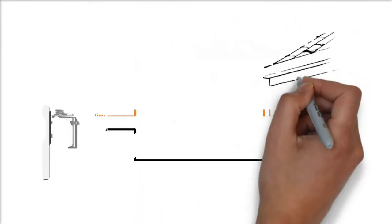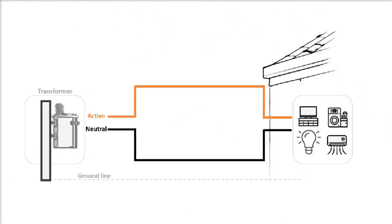In order to understand why electric shocks can occur, we need to show how the electricity network works. Let's start with a simple diagram to explain.